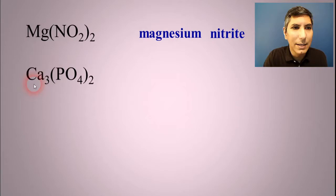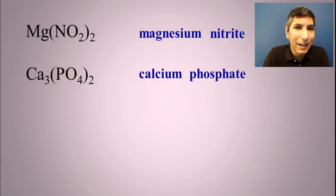Same thing here. Ca is calcium. And PO4 is phosphate. And that's it. Calcium and magnesium are not transition metals. We don't have to put a Roman numeral or a charge or like that. We just name the metal, name the nonmetal.